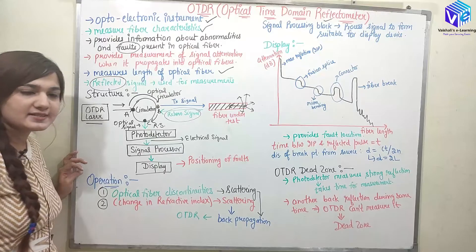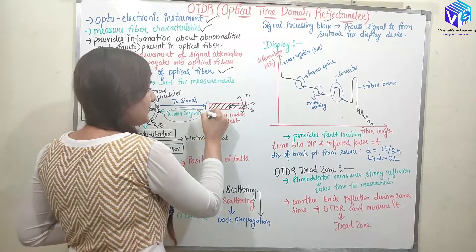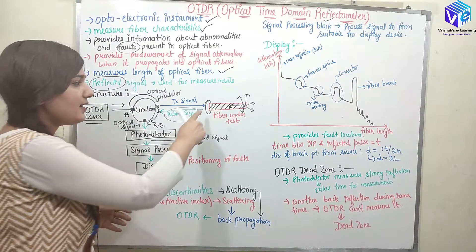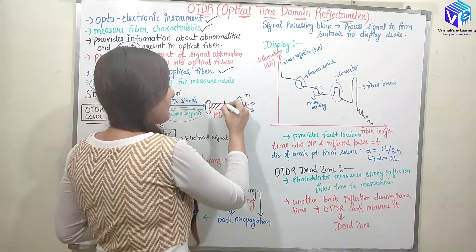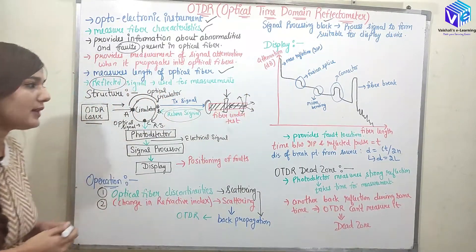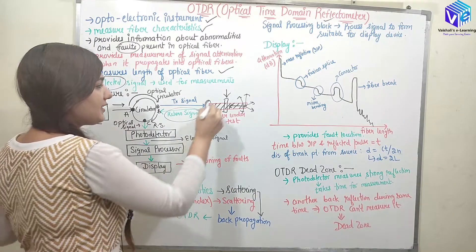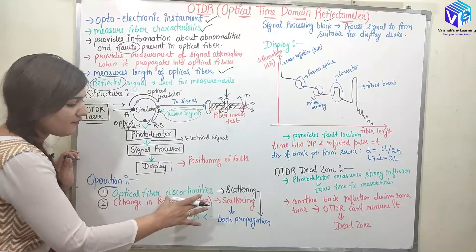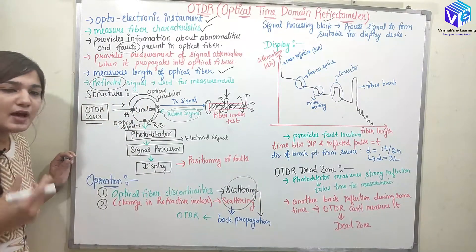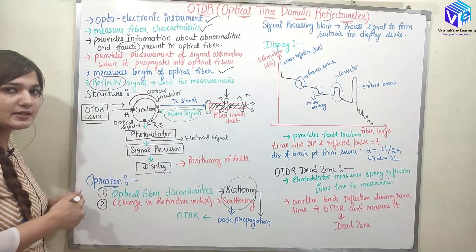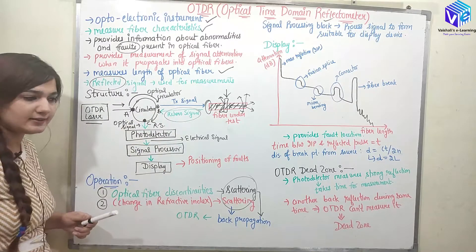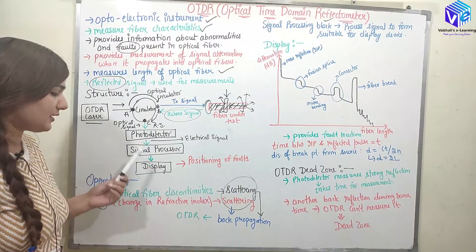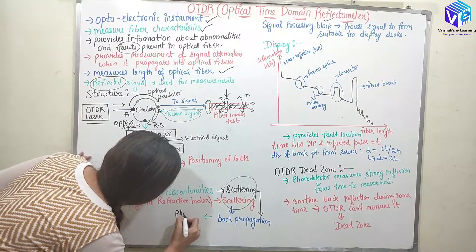When we have optical fiber discontinuities — at the initial point where we have an air-glass interface, or at the place of a connector — scattering occurs due to a refractive index gap. Whenever there is a change in refractive index, we get scattering, which generates a back-propagated return signal that travels to the photo detector and then to the signal processing block and display.